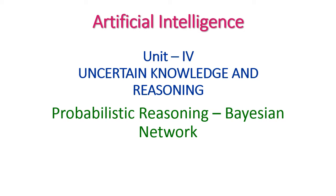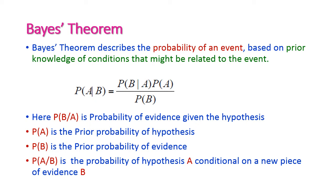Now we will recall the Bayes rule and some details about Bayesian networks with examples. The Bayes theorem describes the probability of an event based on prior knowledge of conditions that might be related to that event. The formula is: P(A|B) = P(B|A) × P(A) / P(B), where P(B|A) is the probability of evidence given the hypothesis.